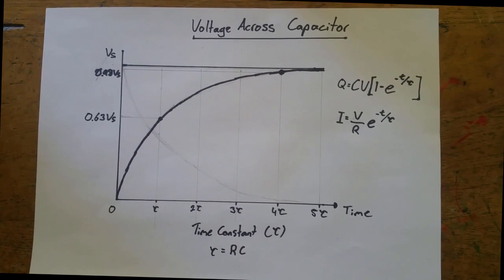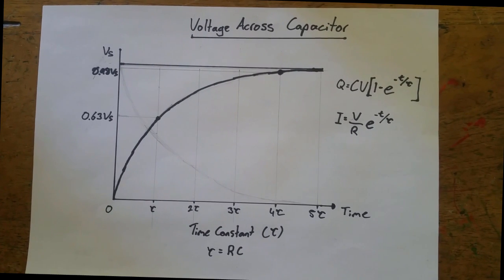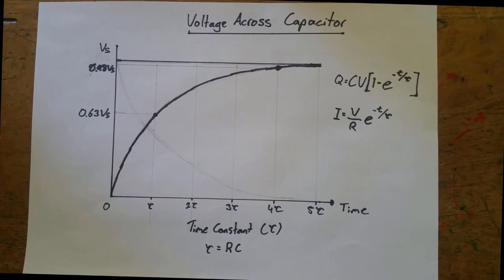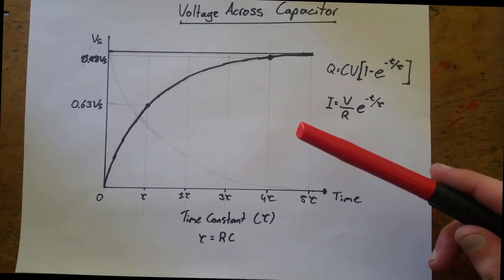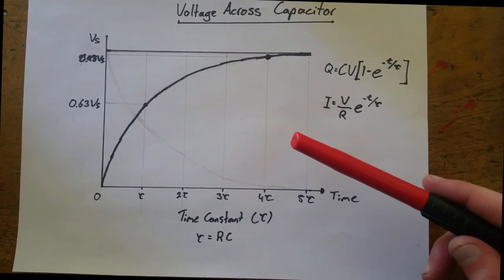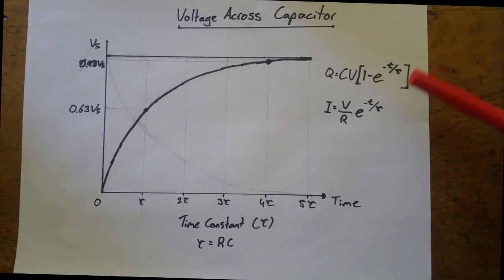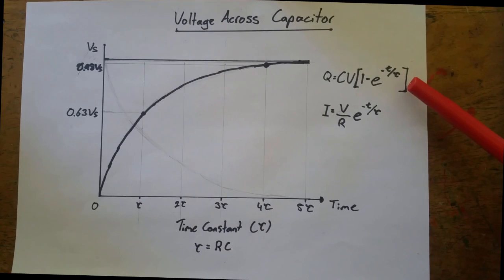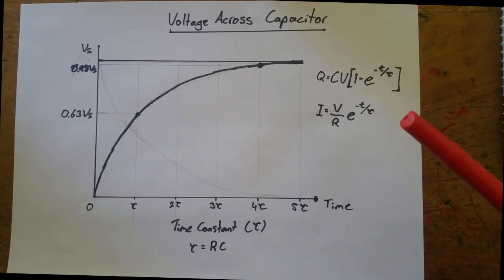When charging a capacitor in a DC circuit, there are some captivating things to look at. Here we have a graph showing the voltage across the capacitor over time, relating to this equation which is extended from the general equation Q equals CV.